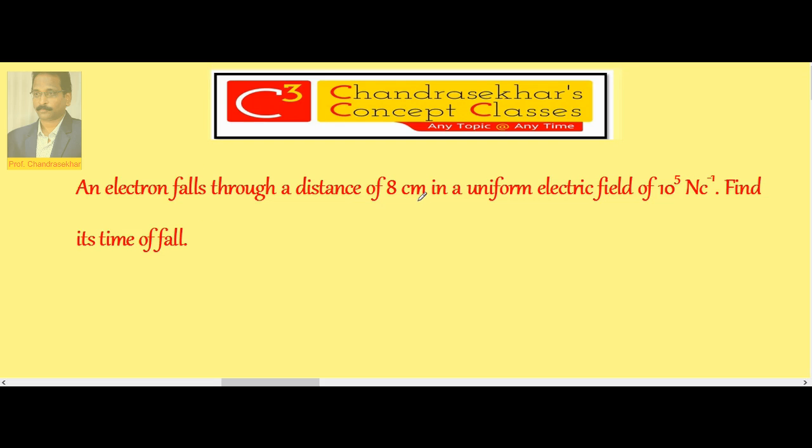An electron falls through a distance of 8 centimeter in a uniform electric field of 10 to the power of 5 Newton per Coulomb. Find its time of fall. Here, the electron is moving through 8 centimeter distance in the electric field.